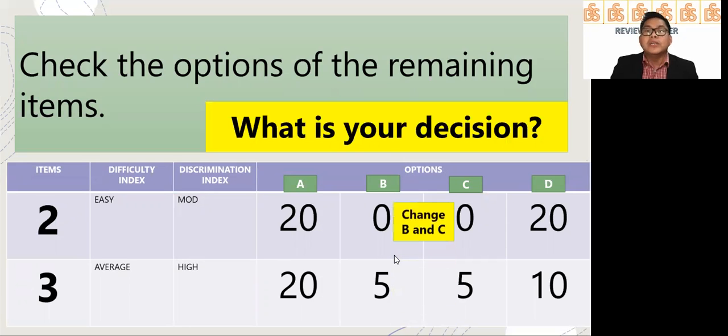For item number 2, you may change options B and C. That means these are not good options. Even if 2 is a good item, B and C are not good options. So you have to revise. You have to change options B and C. While item number 3 are very valid, so we can consider that for item bank. We may now use item number 3 for item bank.